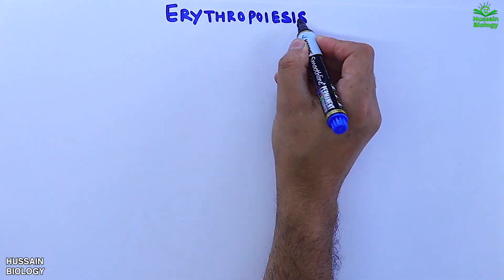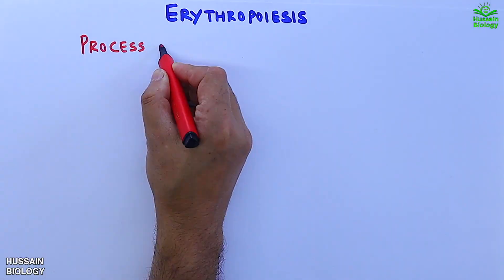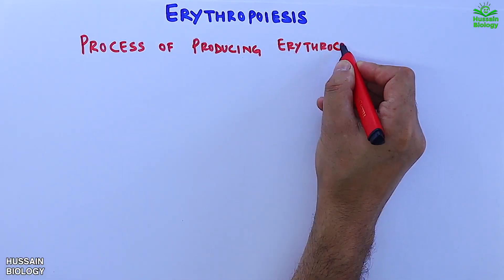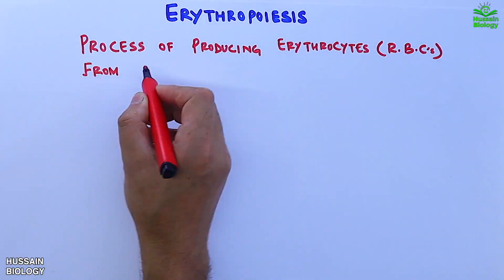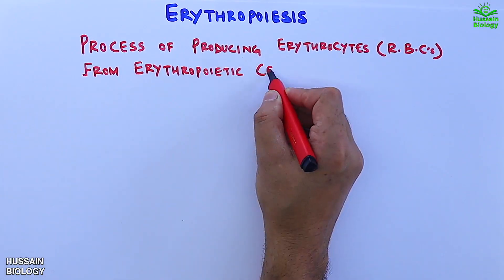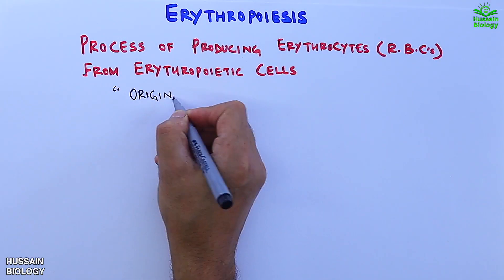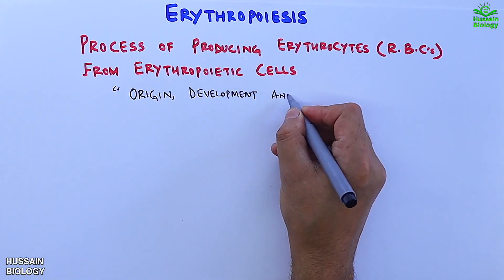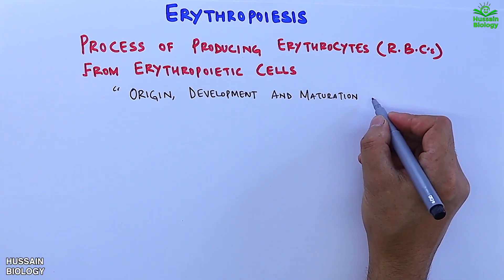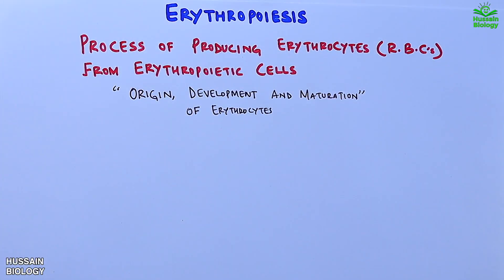Erythropoiesis is a process of producing erythrocytes or RBCs from erythropoietic stem cells, which involves the origin, development, and maturation of erythrocytes.